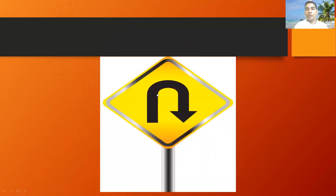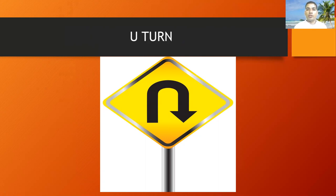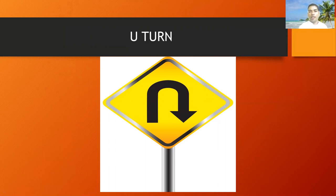Next, what sign means this? In this sign, it shows going to one side and then coming back again — it shows another way. This sign is showing about a U-turn. You can see it has the letter U shape. You must understand this sign means U-turn. If you want to take a U-turn and you see this type of sign, you can take the U-turn.